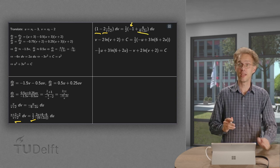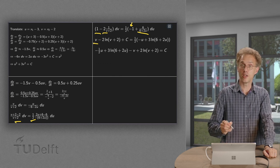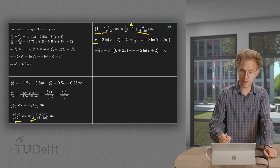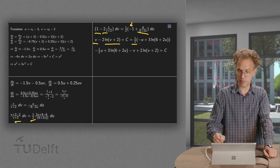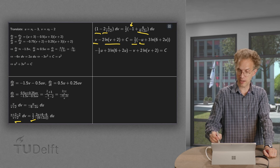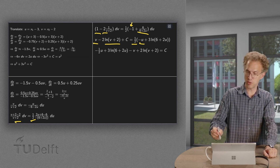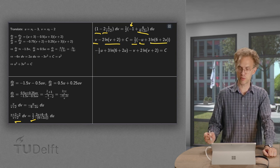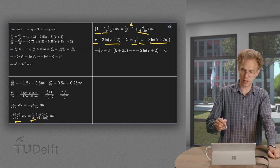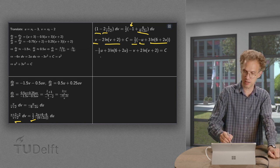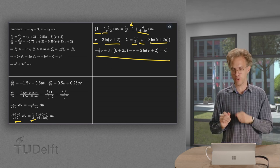And now we can integrate. The 1 becomes a v, the 1 over v plus 2 becomes a ln of v plus 2. The 1 half remains, minus 1 becomes a minus u, and 6 over minus 6 plus 2u becomes a ln of minus 6 plus 2u. And then we can bring everything to the same side in order to obtain a parametric equation in the uv-plane.